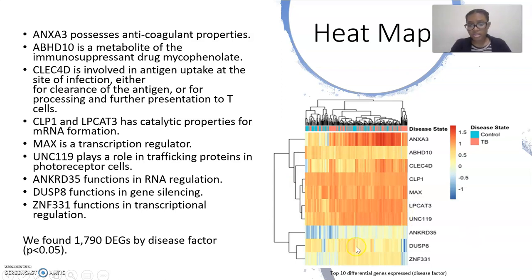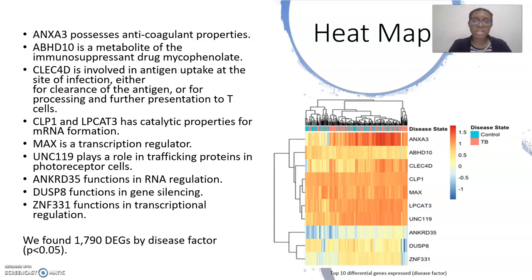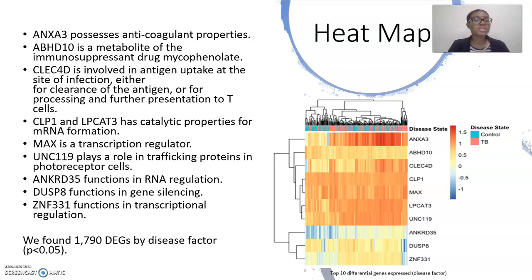On the right is a heat map of the top 10 differentially expressed genes, and on the left are their functions. ANOVA3 possesses anticoagulant properties. ABHD10 is a metabolite of the immunosuppressant drug mycophenolate. CLEC4D is involved in antigen uptake at the site of infection, either for clearance of the antigen or for processing and further presentation to T cells. CLP1 and LPCAT3 have catalytic properties for mRNA formation. MAX is a transcription regulator. UNC119 plays a role in trafficking proteins in photoreceptor cells. ANKRD35 functions in RNA regulation. DUSP8 functions in gene silencing.